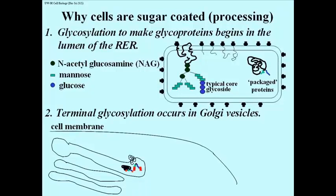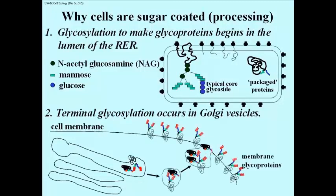The vesicle will bud off of the trans face of the Golgi to form, in this case, a secretion vesicle which migrates to the cell surface. The membranes fuse, the proteins that are in the lumen come out, and those of course are secreted proteins. The proteins that are embedded in the membrane of this vesicle, with the sugars facing inside the vesicle, become sugars on the cell's surface — on the plasma membrane — and this accounts for why the sugars are only on the outside surface of cells.